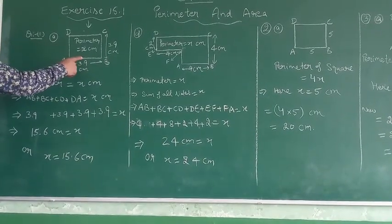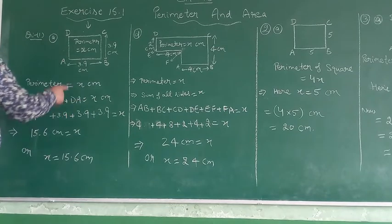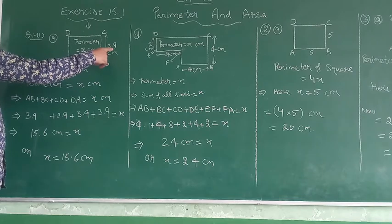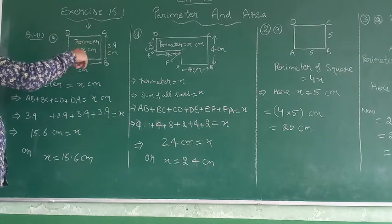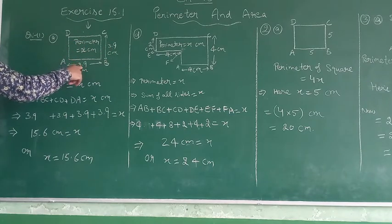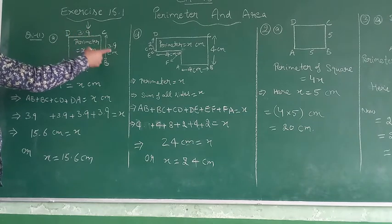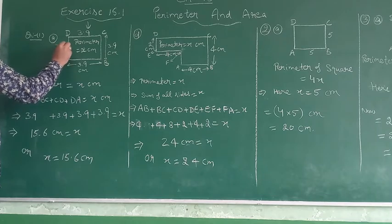Perimeter is equal to X value. We have values: AB is 3.9, BC is 3.9. It means all sides are same. This is also 3.9, means this is also 3.9. This is 3.9 means this opposite side is also same. It means it will be also 3.9 cm.